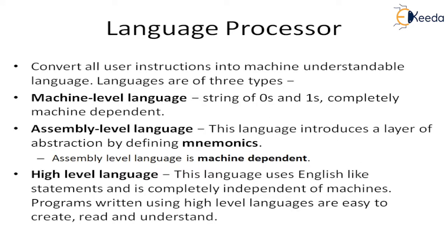The next type of system software is the language processor, which is a main part of the computer system that converts all user instructions into machine-understandable language. There are basically three types of languages: machine level language, assembly level language, and high level language. Machine level language contains strings of zeros and ones and is completely machine dependent. Assembly language introduces a layer of abstraction by defining mnemonics and is also machine dependent. High level language is like our English language — it is machine independent, and programs written in it are easy to create, read, and understand.